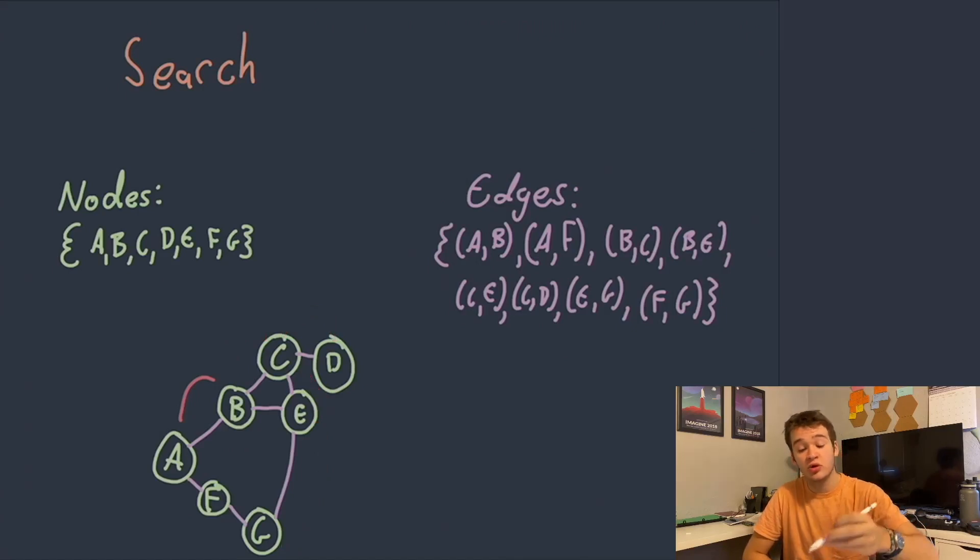So we could also use another algorithm called breadth first search which is going to follow multiple different paths down at a time until it finds a solution at a certain depth. So you'll see here it branched out to both B and F and then from B it went to C and E and from F it went to G which found this solution which is obviously the optimal way to get there in this graph.